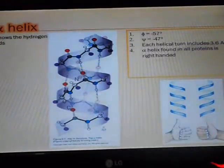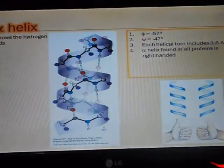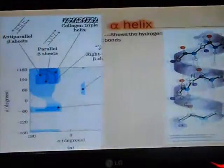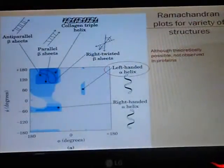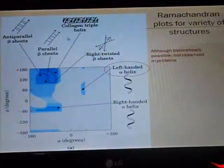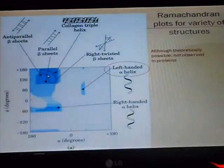Each alpha helix turn includes 3.6 amino acids. Alpha helix is found in all proteins as right-handed and a little bit as left-handed. When we see this plot, we will see that the allowed area in the second quadrant includes the antiparallel beta sheet, parallel beta sheet, and the collagen triple helix, and the right-twisted beta sheet.